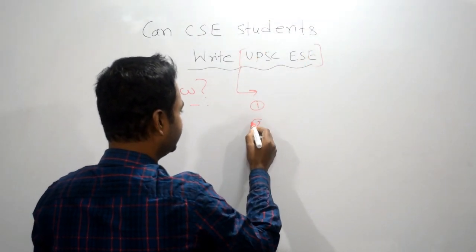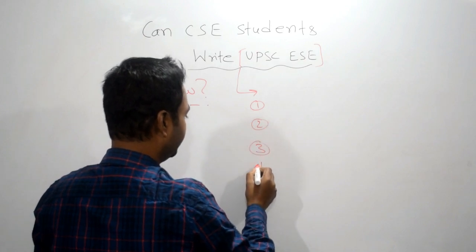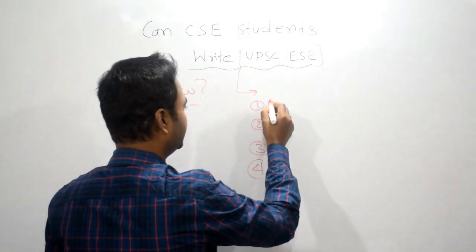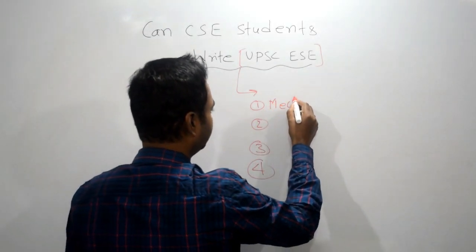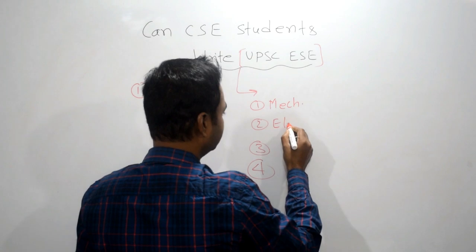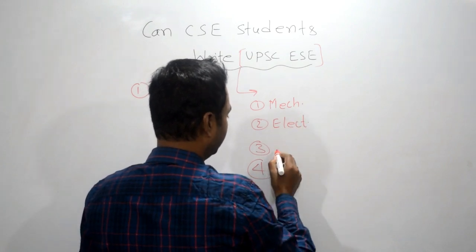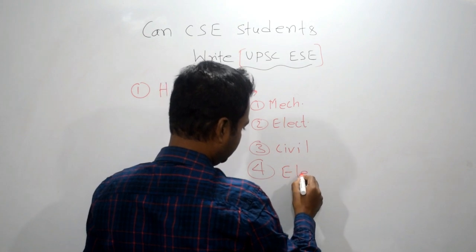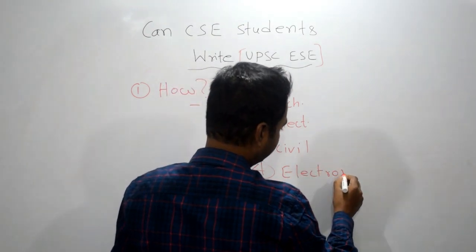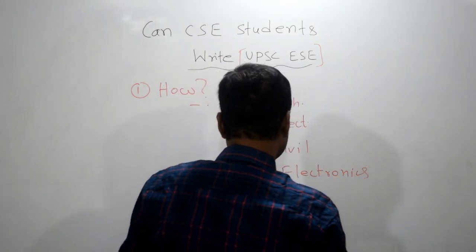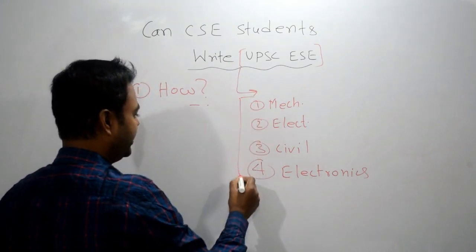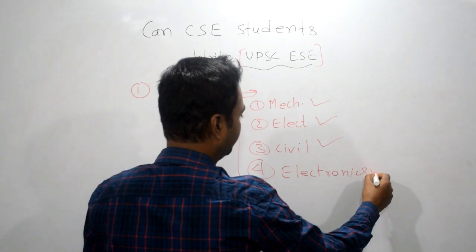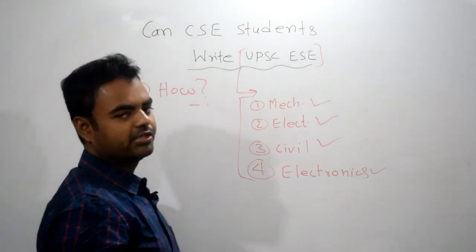So UPSC conducts this examination every year in four branches. Four segments, you can say that. One is Mechanical and Electrical, and then Civil, and then Electronics and Telecommunication. So you have to write examination in one of these four departments only.